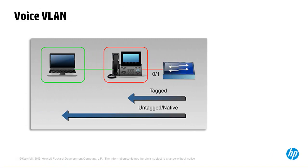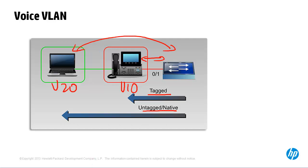HP switches can be configured to support IP phones. In this scenario, tagged frames are sent to the phone — so the phone could be in VLAN 10 — while untagged frames are sent between the switch and the PC through the phone, with the PC in VLAN 20. VLAN 20 is the untagged or native PVID VLAN and VLAN 10 is the tagged VLAN. This allows you to have two devices on a single port in different VLANs.